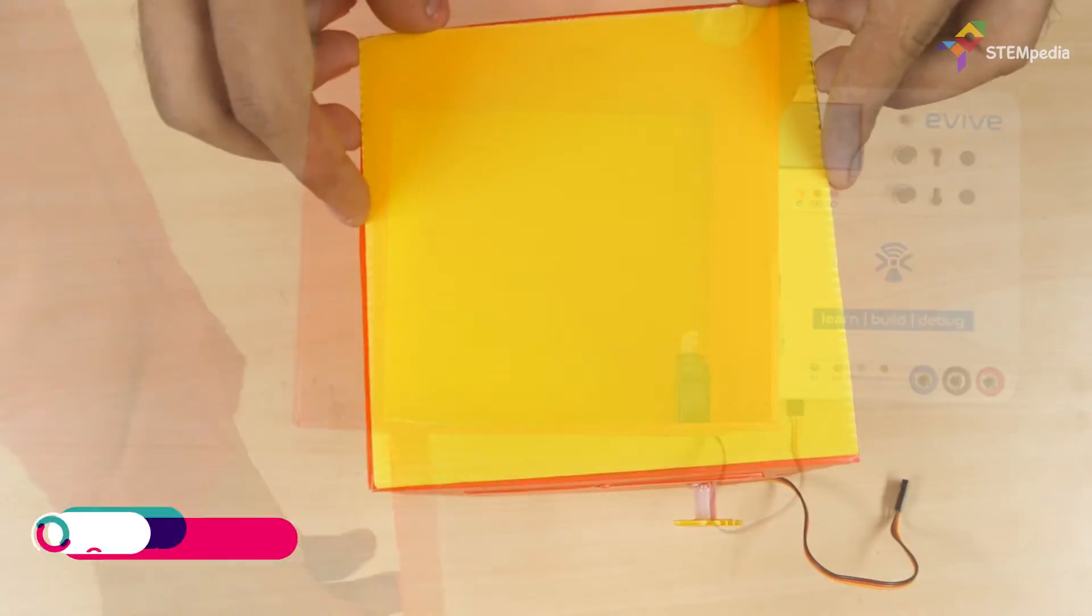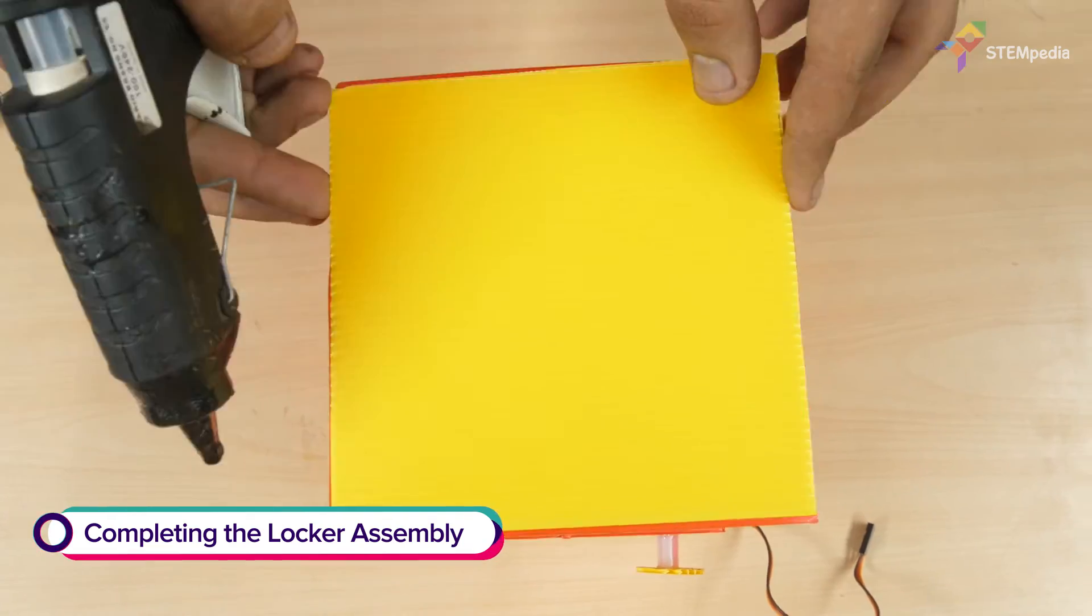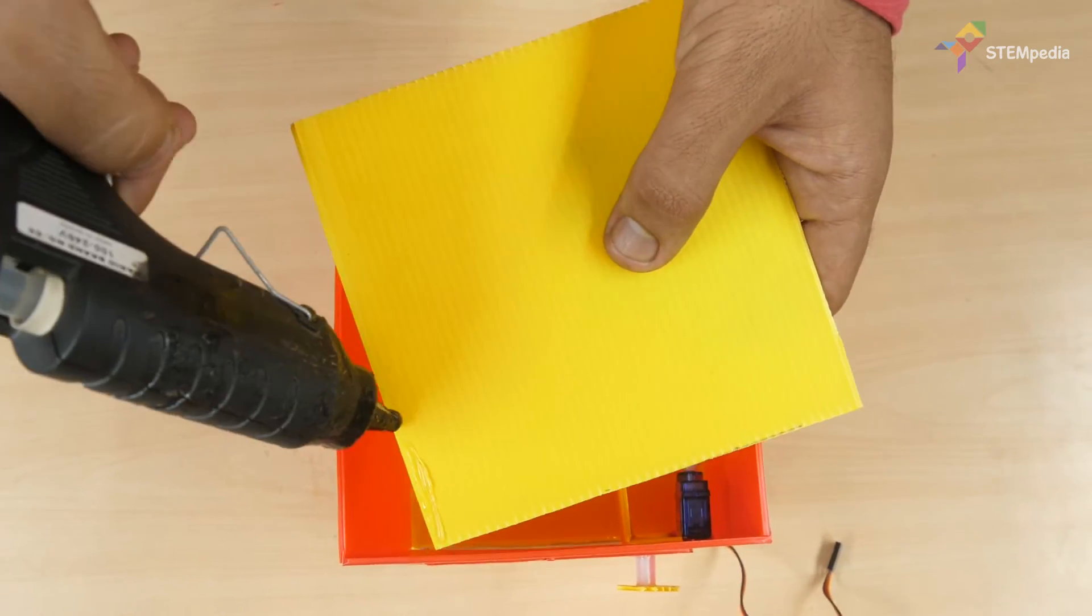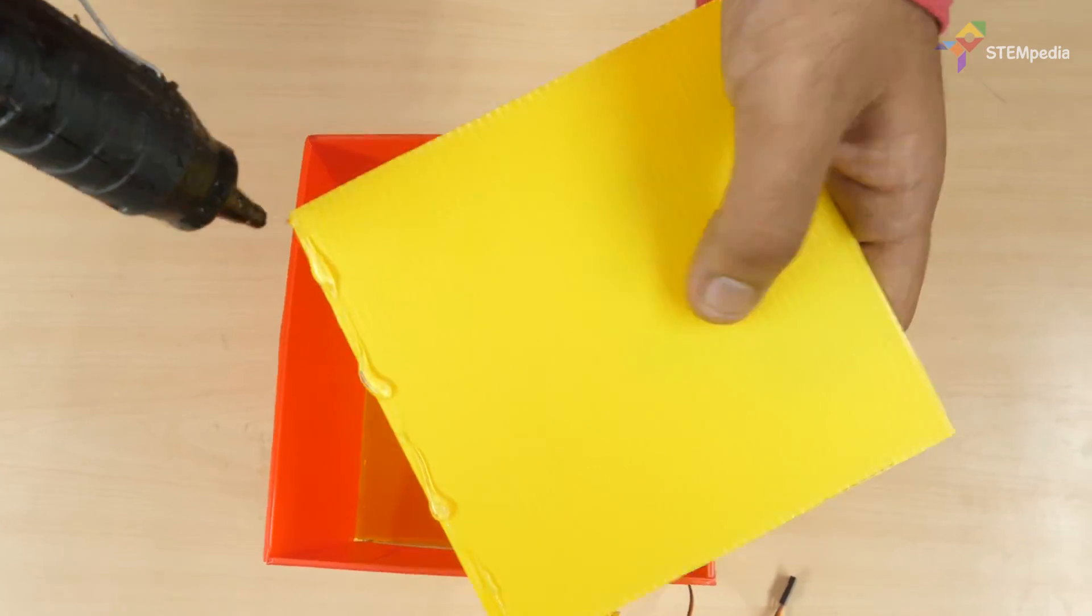Now let's complete the locker assembly. Take the second half of the 30x15cm yellow sheet and paste it on the top of the box.